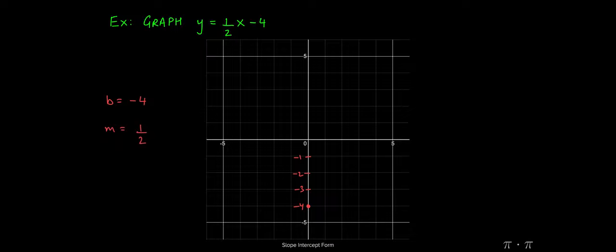Also we notice that the slope is one half. y equals mx plus b, so m is given to be one half. This means that the rise is one unit and the run is two units.